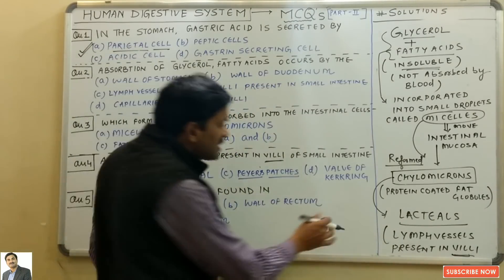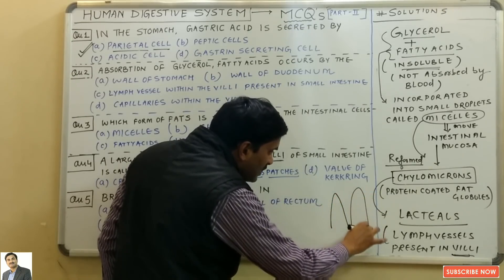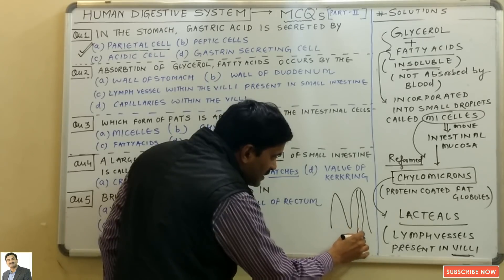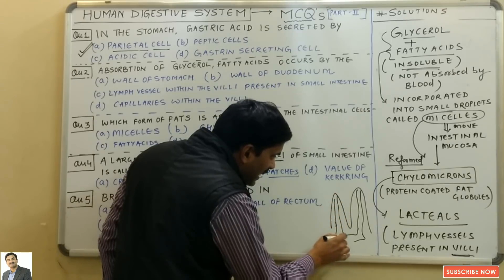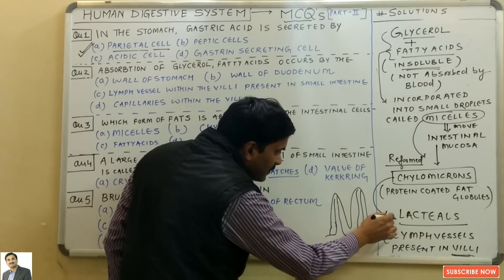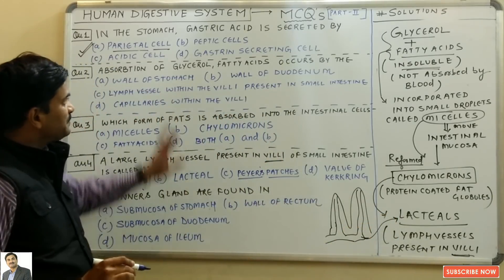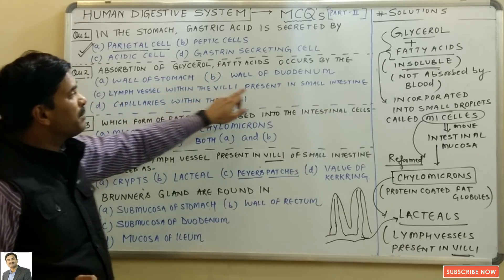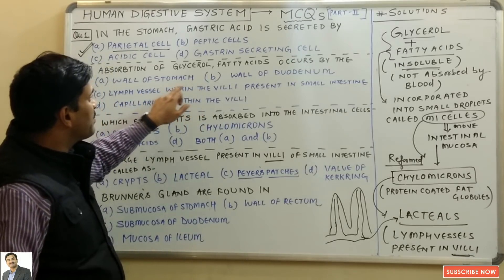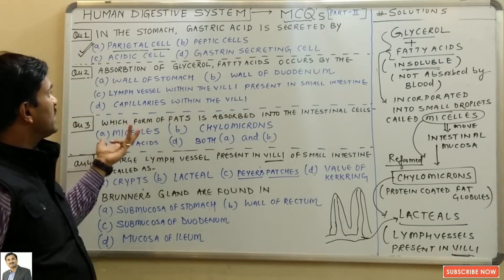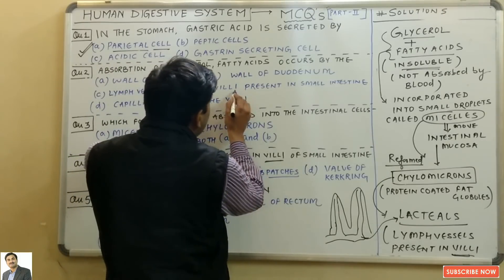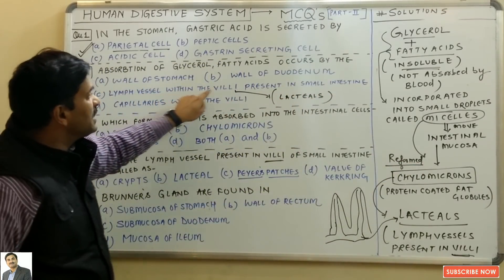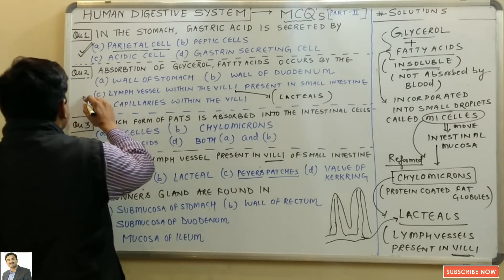The villi are finger-like projections present in the small intestine. Within these villi, certain lymph vessels are present — and these lymph vessels are called lacteals. So the lymph vessel present within the villi of the small intestine is responsible for absorbing glycerol and fatty acids. The answer to question two is C — lacteals.